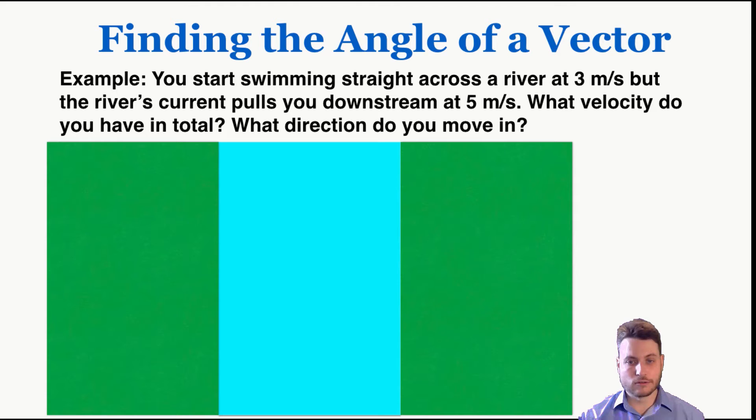So you're trying to swim across the river at 3 meters per second, but the current is working with you, or it's pushing you 5 meters per second downstream like this. So we need to know what velocity do we have in total in the river and what direction do we move in. That's just code for what angle are you moving in the river.